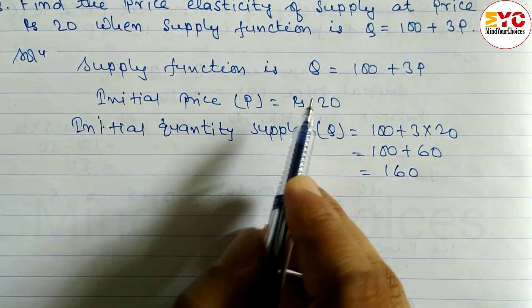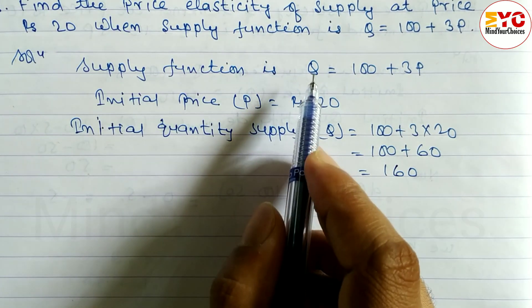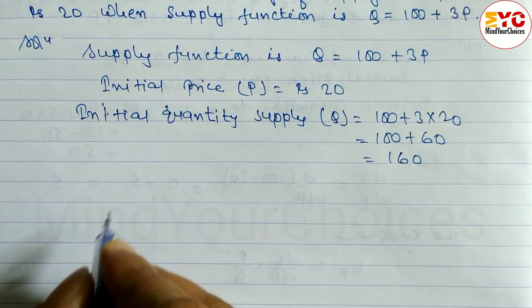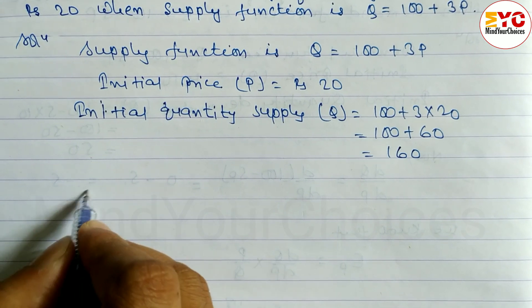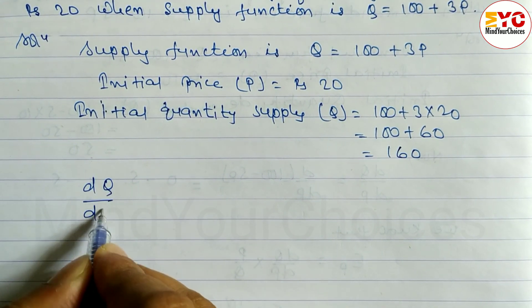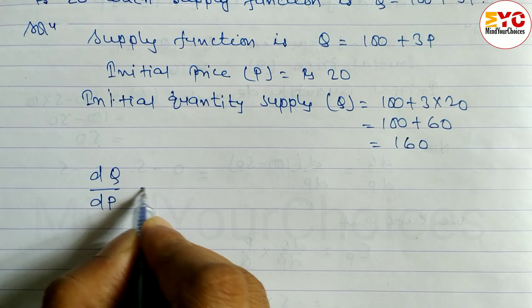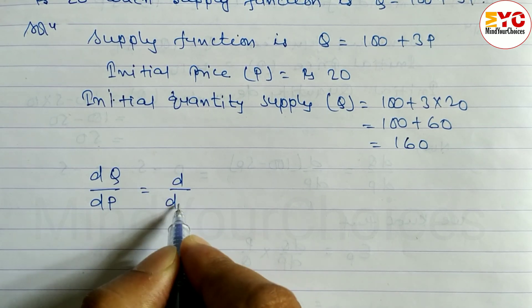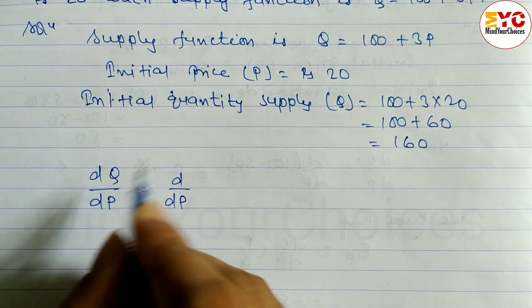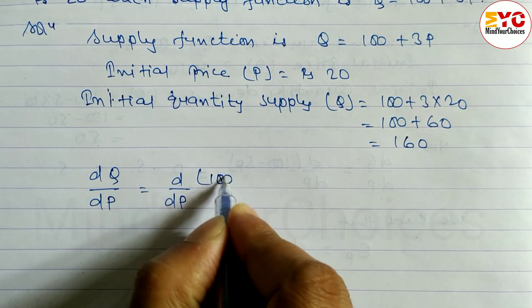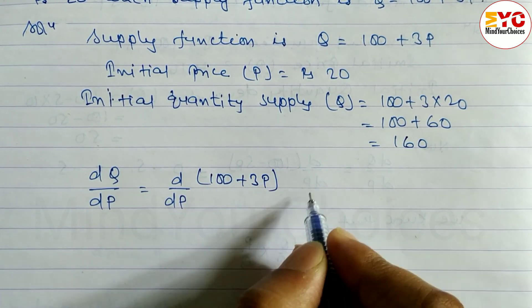So we have to find out the derivative of Q with respect to P. dQ/dP equals d/dP of 100 plus 3P. What is the value of Q? 100 plus 3P.